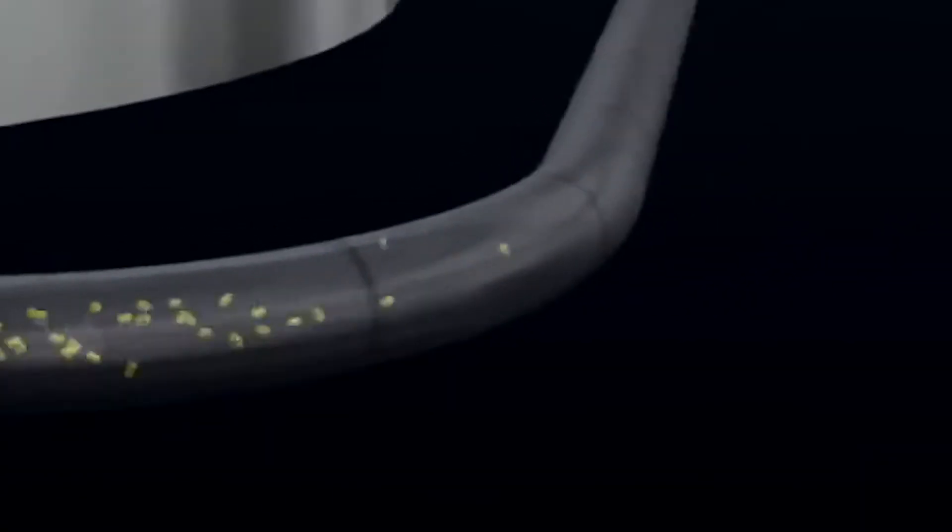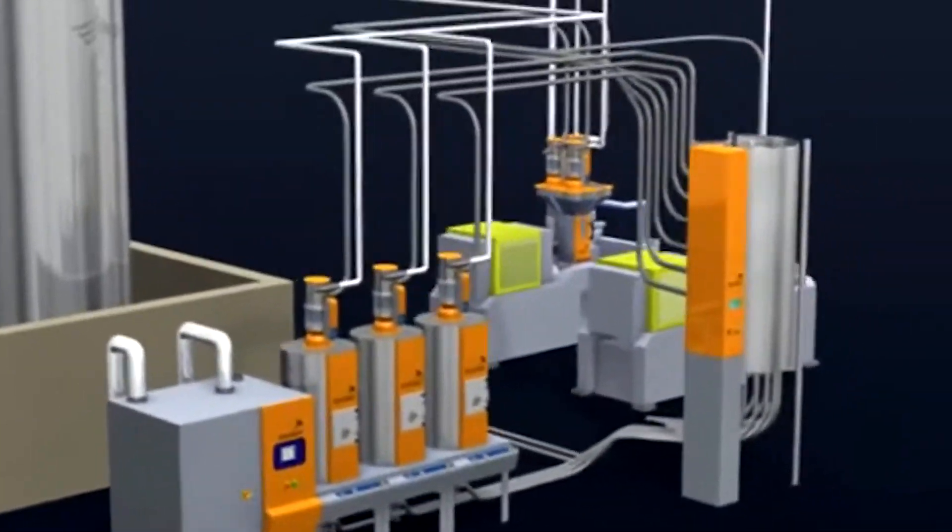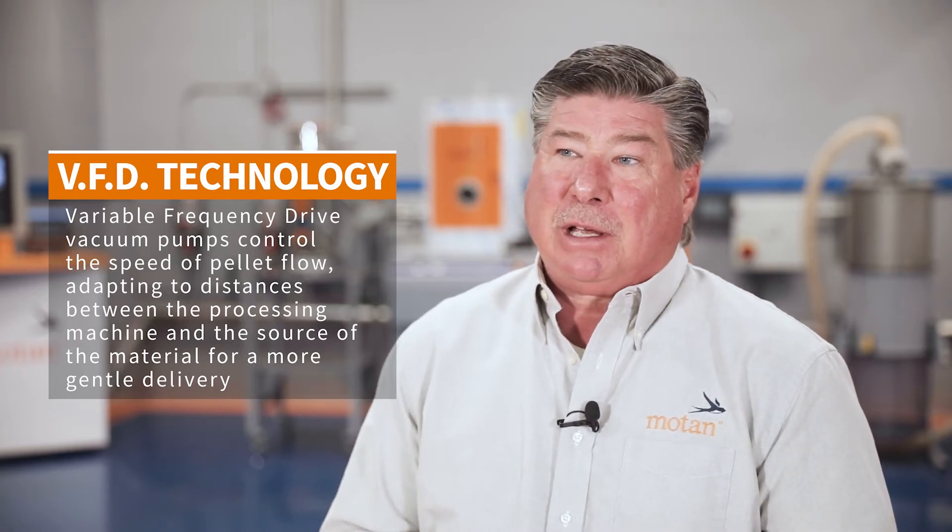In most of our conveyance systems, we'll put VFD technology so we can handle that PET plastic pellet as gently as possible and still get it to the machine when required.